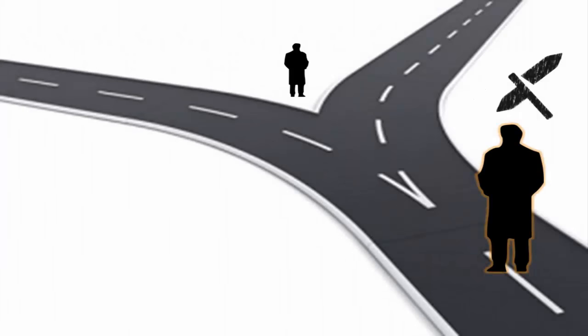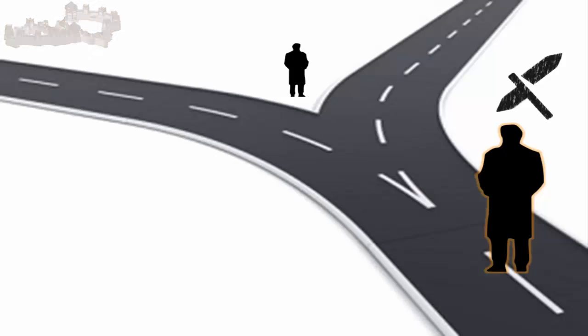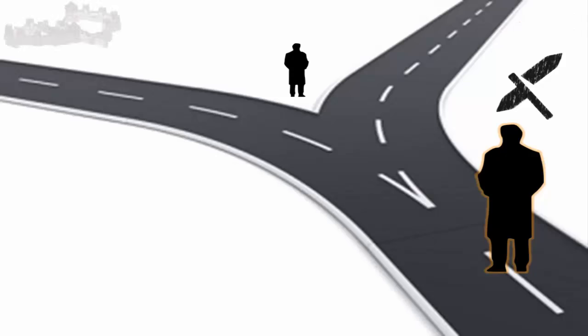For the sake of explanation, let us assume that Truthsville is on the left side of the fork. However, you can assume it on the right side as well — it really doesn't matter.